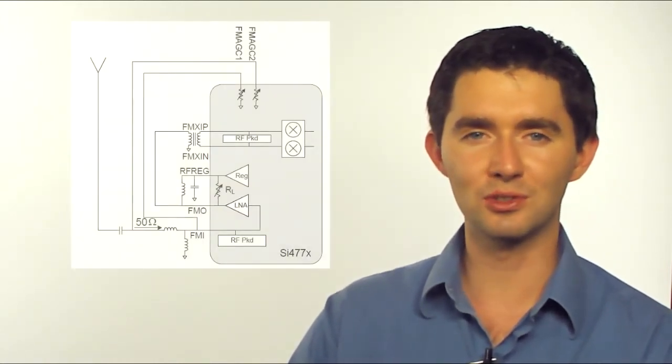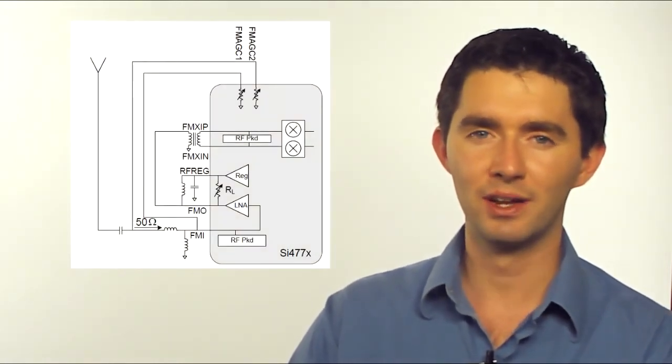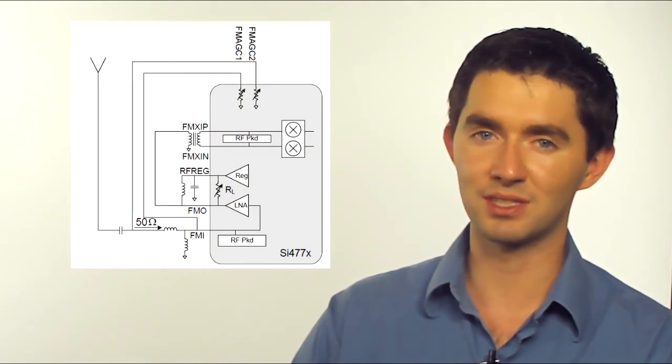The fully integrated voltage controlled oscillator and the phase lock loop really help for accurate tuning of the FM stations. The package itself is a 6x6 QFN, so you're actually not going to take up that much board space. And you could throw this into any of your projects. It's $5.26 for 10k quantities. And if you want the HD version, which is the 4777, it's $6.31. That means you can receive HD radio with it.